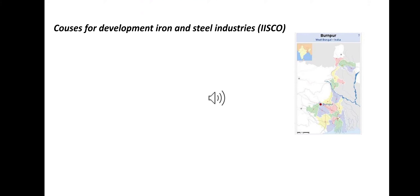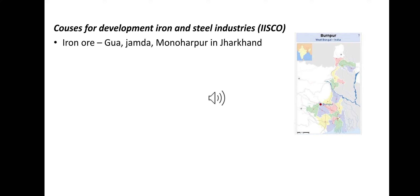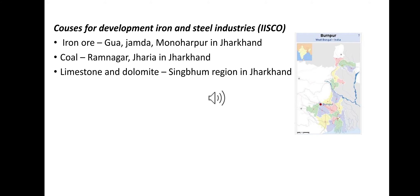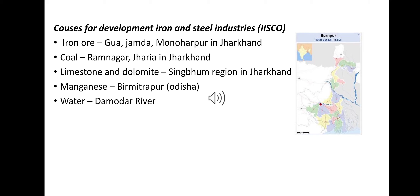Causes for the development of ISCO: first, iron ore is obtained from Gua, Jamshedpur, and Manoharpur area in Jharkhand. Second, coking coal from the Ramnagar coalfields and Jharia of Jharkhand is easily available. Third, limestone and dolomite are brought from the Singhbhum region in Jharkhand. Fourth, manganese is obtained from Birmitrapur in Odisha.